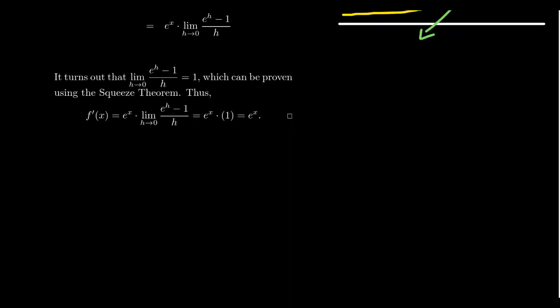What that does for us then is that if we finish this up, e^x times this limit, which turns out to be one, you'll get e^x times one. And we see that then the derivative of e^x is equal to e^x itself. It's quite phenomenal, really. So e^x is its own derivative. The derivative of e^x is e^x. This is incredible. It really is.